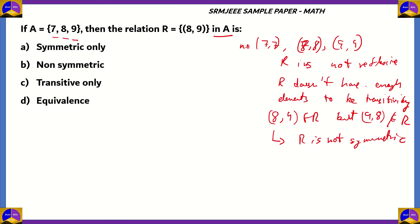Since R is not reflexive, not symmetric, and not transitive, option D — equivalence — is incorrect, as an equivalence relation requires all three properties. Option C — transitive only — is also incorrect. Since (9, 8) is not present while (8, 9) is, the most appropriate option is option B: non-symmetric. This option doesn't claim R is reflexive or transitive, making it the best fit.